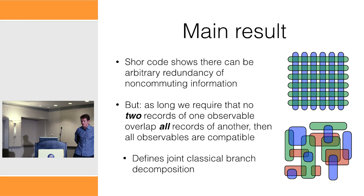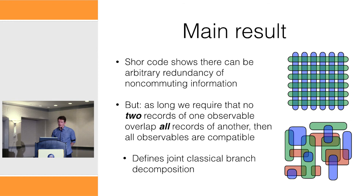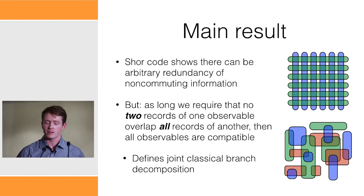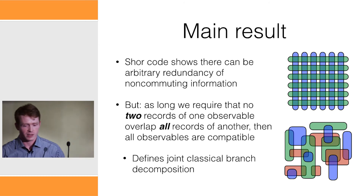The main results of this preliminary investigation are that although there are states the universe could be in that exhibit arbitrary redundancy of non-commuting information — the spatial distribution of records for, say, the X and Z information in a coded qubit — as long as you require that no two records of one observable overlap all records of another, then that set of observables is mutually compatible. This defines a joint classical branch decomposition on which all these observables have branches that are simultaneous eigenstates of them all.